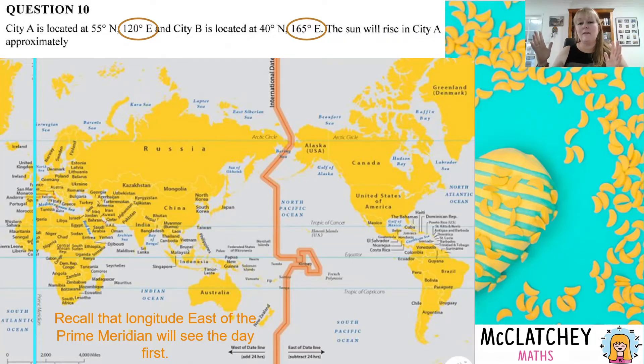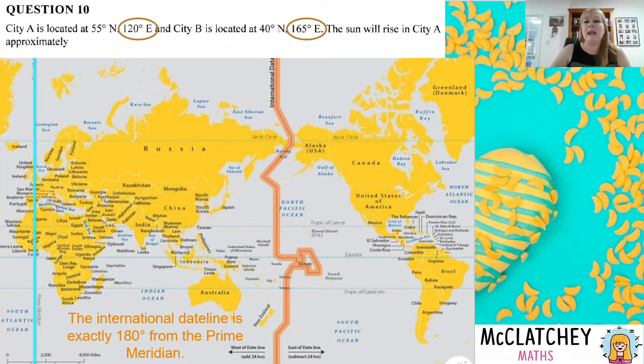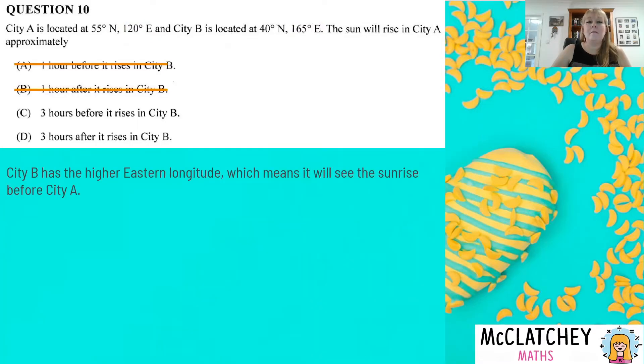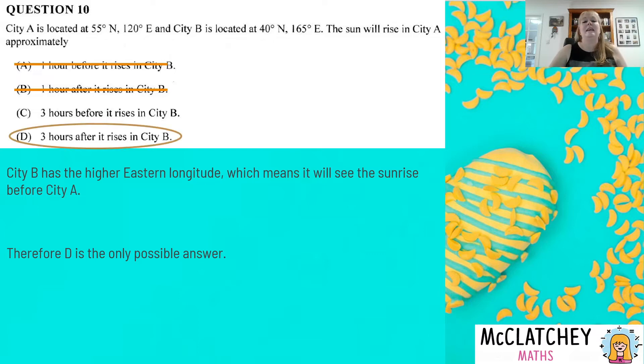Okay. So if we look at our particular map here and our two cities, well, we've got one that is further east, that is city B. It's going to see that sunrise before city A. So that means that we can actually rule out now, if we look at the things three hours before it rises in city B, or three hours after it rises in city B, well, it means that D is the only possible answer. Another way to think about it is the sun rises in the east. So the first people, the people that are the most far east, they will see it first. That's a good way to think about it.